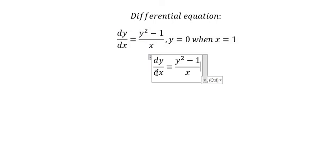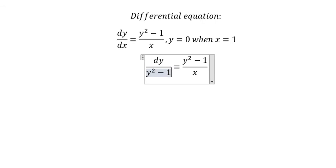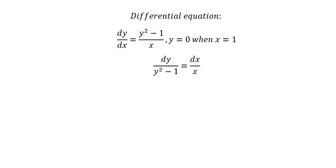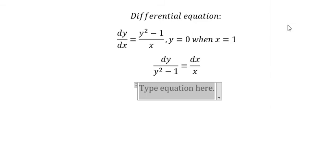We put the x on the right and y squared minus 1 on the left. Next, we need to put the integration for both sides.